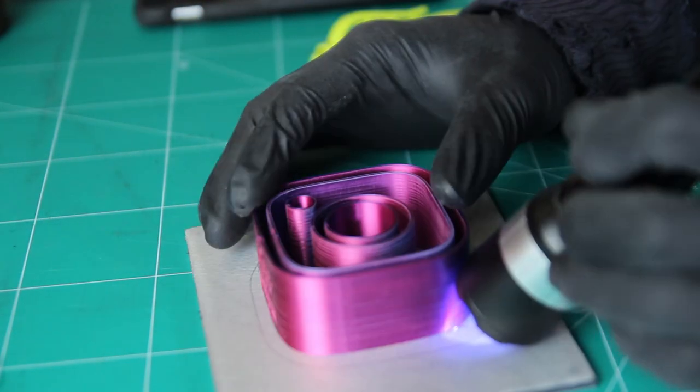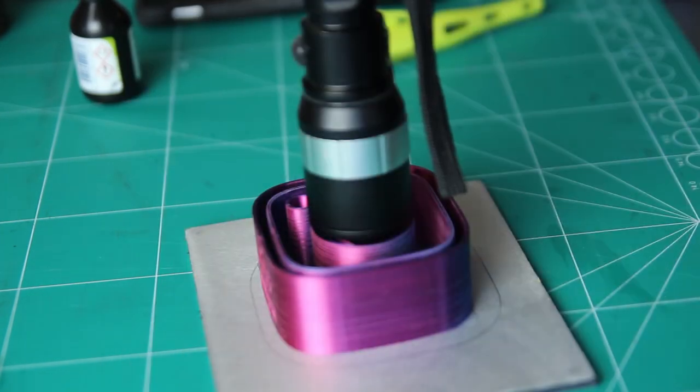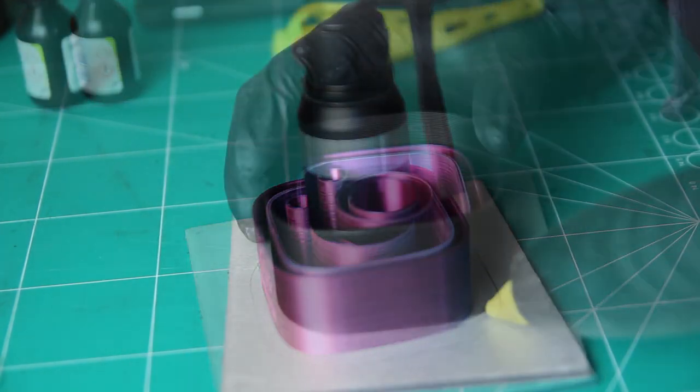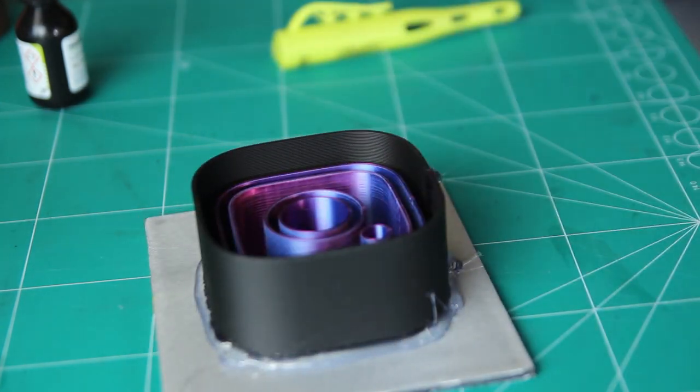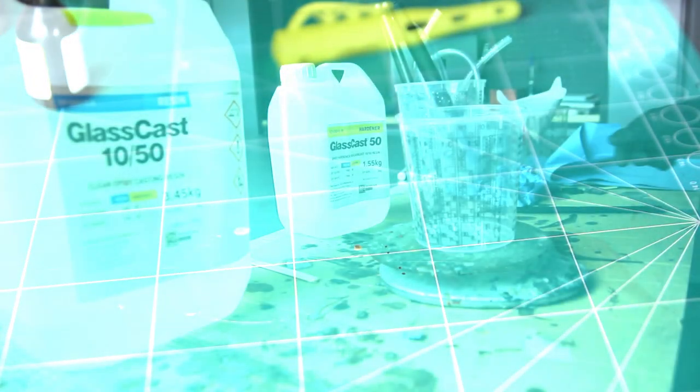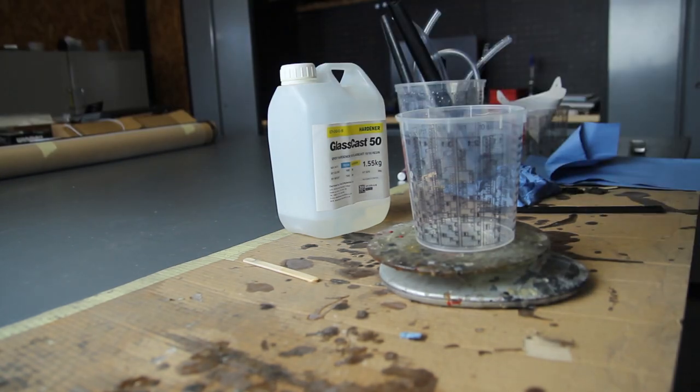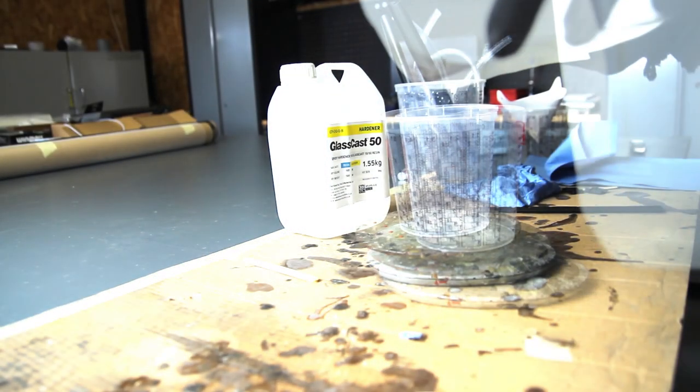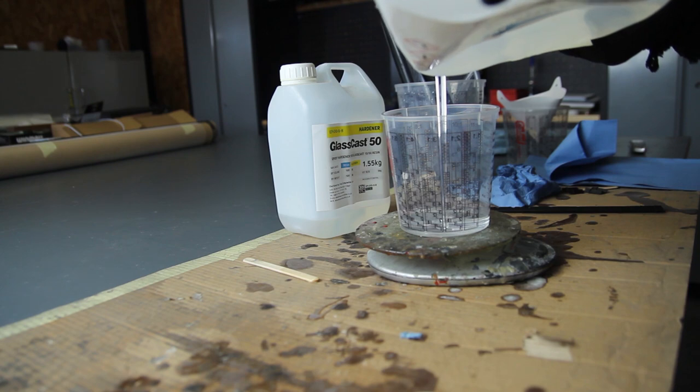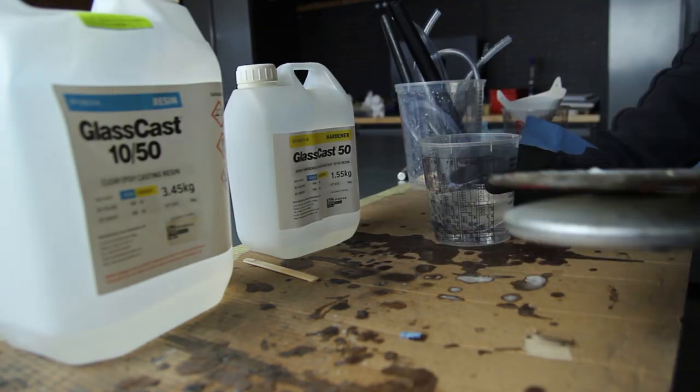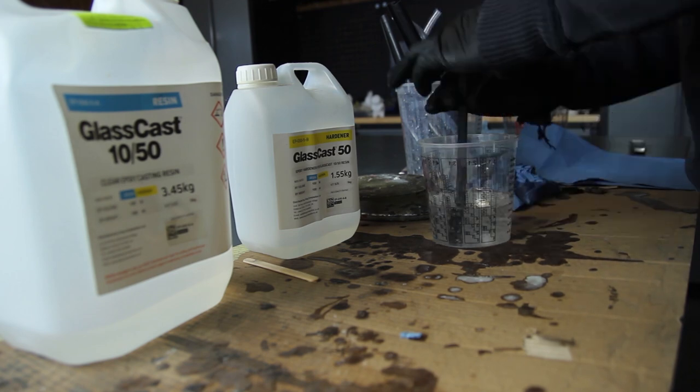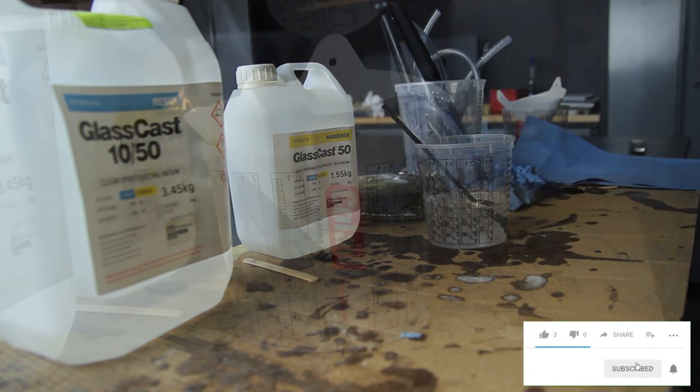I didn't use CA glue because I found that in epoxy resin it sometimes leaves some marks, though it may depend on the brand. I'm using some hot glue to close the mold box to avoid leaks. About the resin, I'm using epoxy resin - the Glass Cast range from Easy Composites.